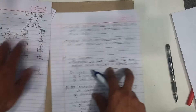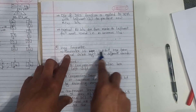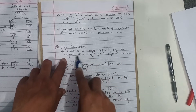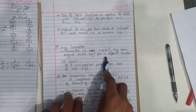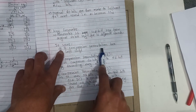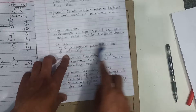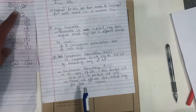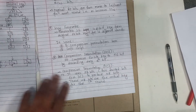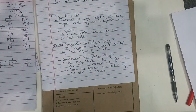Key generation produces 16 48-bit keys from the original 64-bit key for 16 different rounds. It uses 2 compression permutation boxes and left shifts — compression permutation box 1 (PC1) and compression permutation box 2 (PC2), along with left shifts.